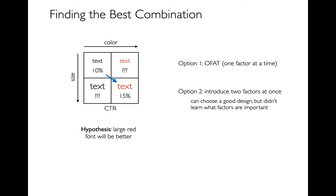Maybe all the improvement came from making it red, and it doesn't matter how large it is. In the first option there's also a disadvantage: maybe these features combine in some way. Maybe people don't like small red font, and they don't like big black font — maybe they only like large red font. So if I'm only exploring one thing at a time, I might conclude it's a bad idea in general and never try the combination that is really what I'm looking for. There are trade-offs here.